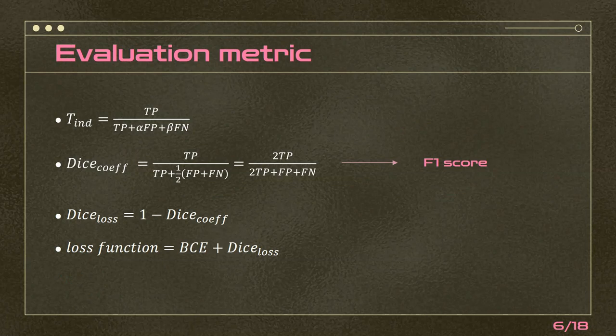But what is dice loss? Dice loss is a loss function extracted from the dice coefficient, and the dice coefficient itself is a special case of the Tversky index. As you can see, if we set alpha and beta to one-half in the Tversky index, we get the dice loss formula, which is identical to the F1 score.